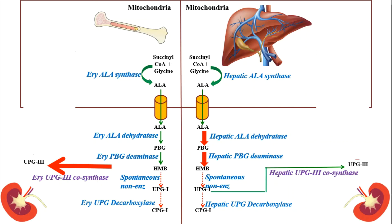Next, we will learn another disease in which erythropoietic UPG-3 cosynthase is defective. But before that, let's recap quickly. Till now we have learned three diseases: one due to defective erythropoietic ALA synthase — which is not classified under porphyria but is X-linked sideroblastic anemia; next, defective hepatic ALA dehydratase leads to acute hepatic porphyria; and defective hepatic PBG deaminase leads to acute intermittent porphyria. In the next video, we will discuss the rest of all the porphyrias and their clinical features. Thank you all.